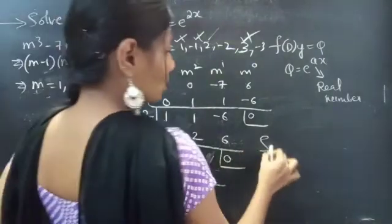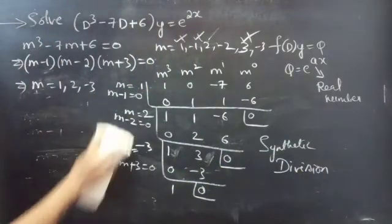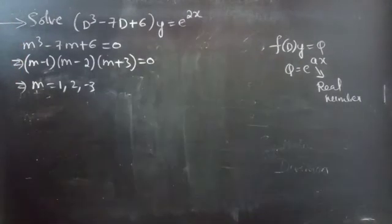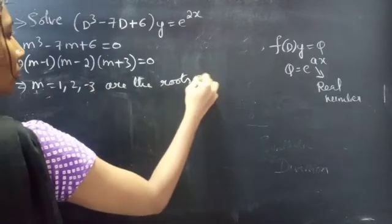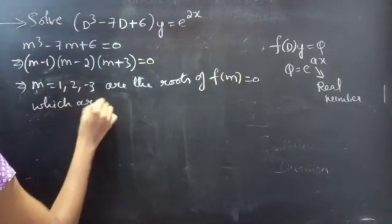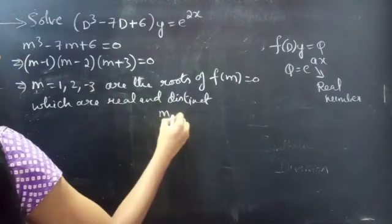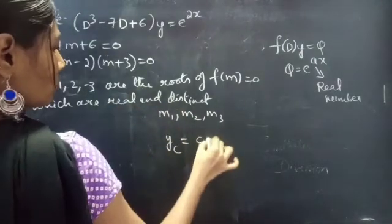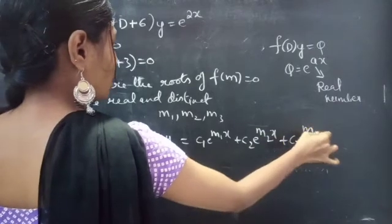So here we have used the synthetic division method. The roots m = 1, 2, -3 of F(m) = 0 are real and distinct. When three roots m₁, m₂, m₃ are real and distinct, the complementary function is yc = c₁e^(m₁x) + c₂e^(m₂x) + c₃e^(m₃x).